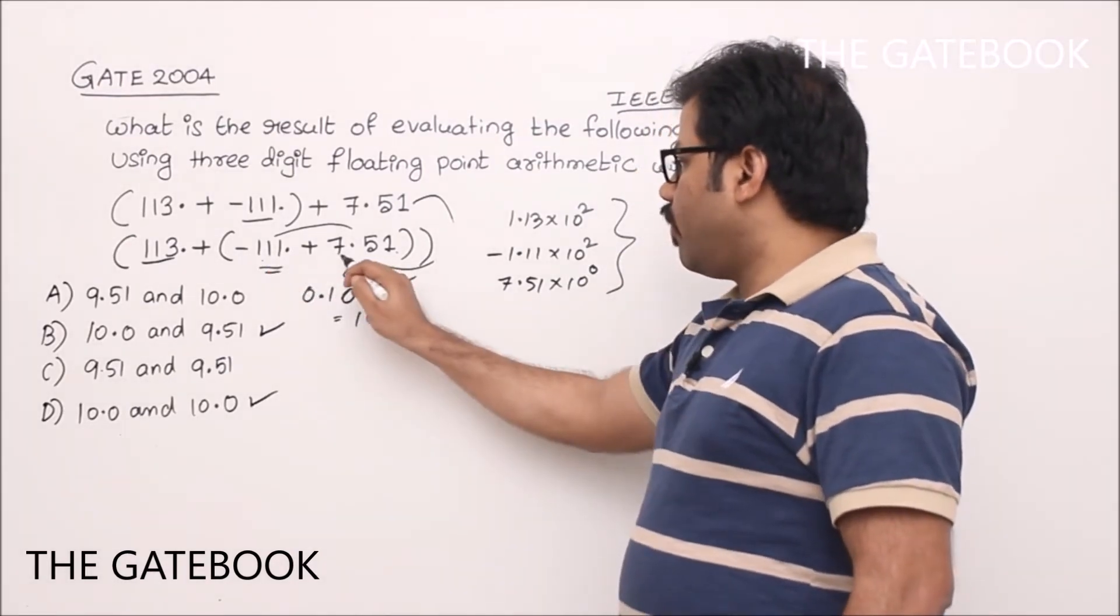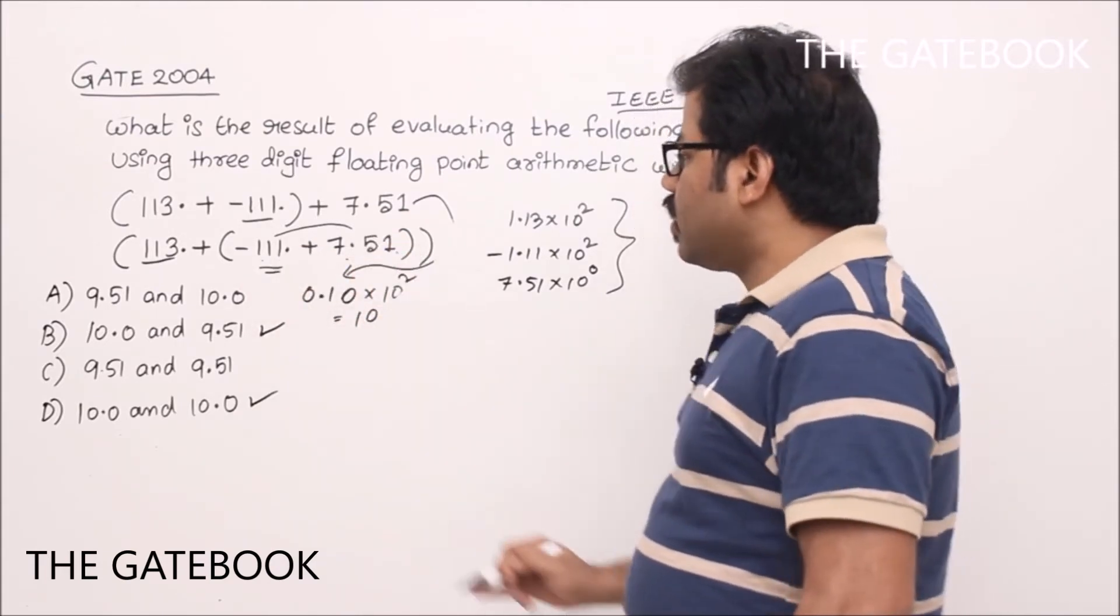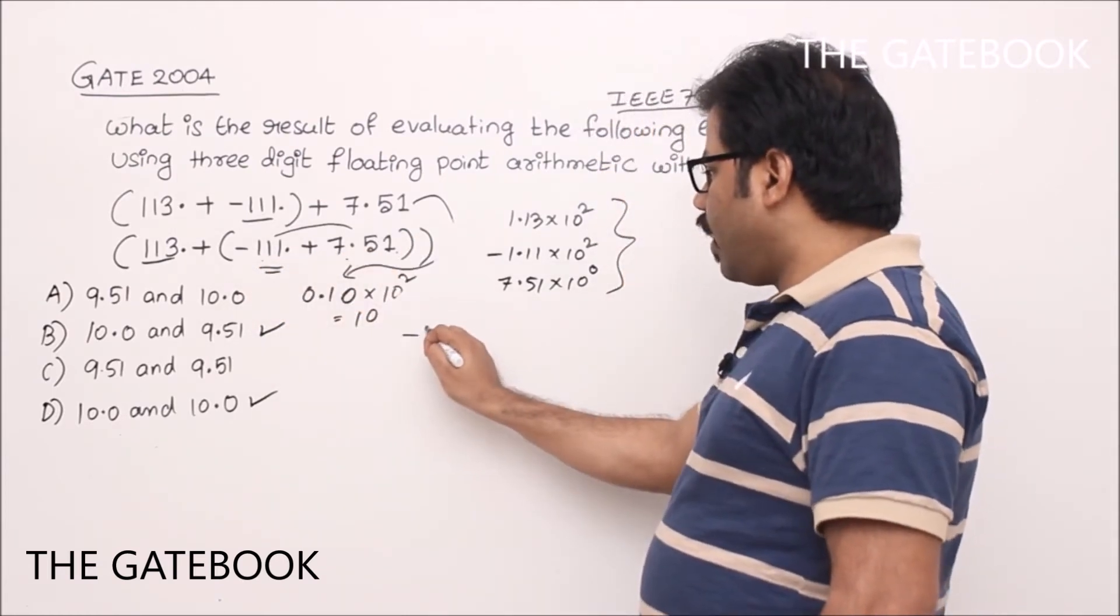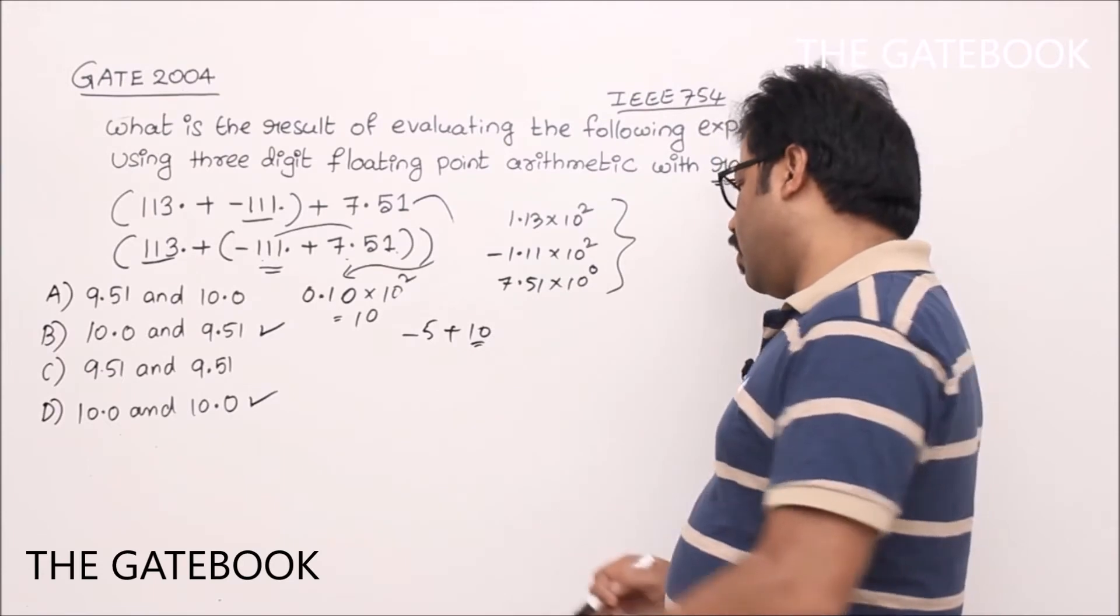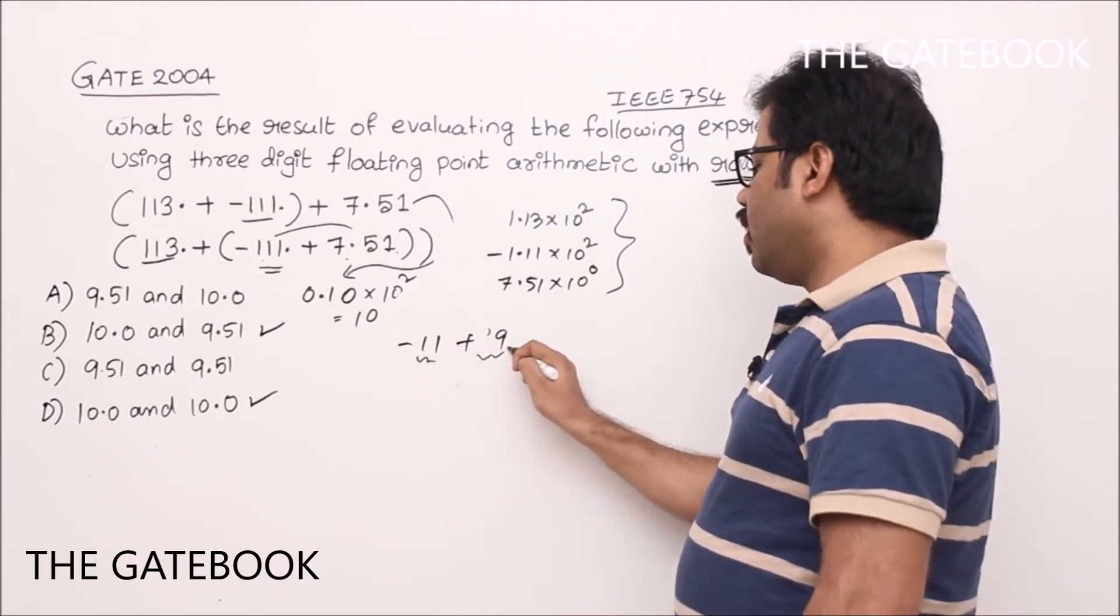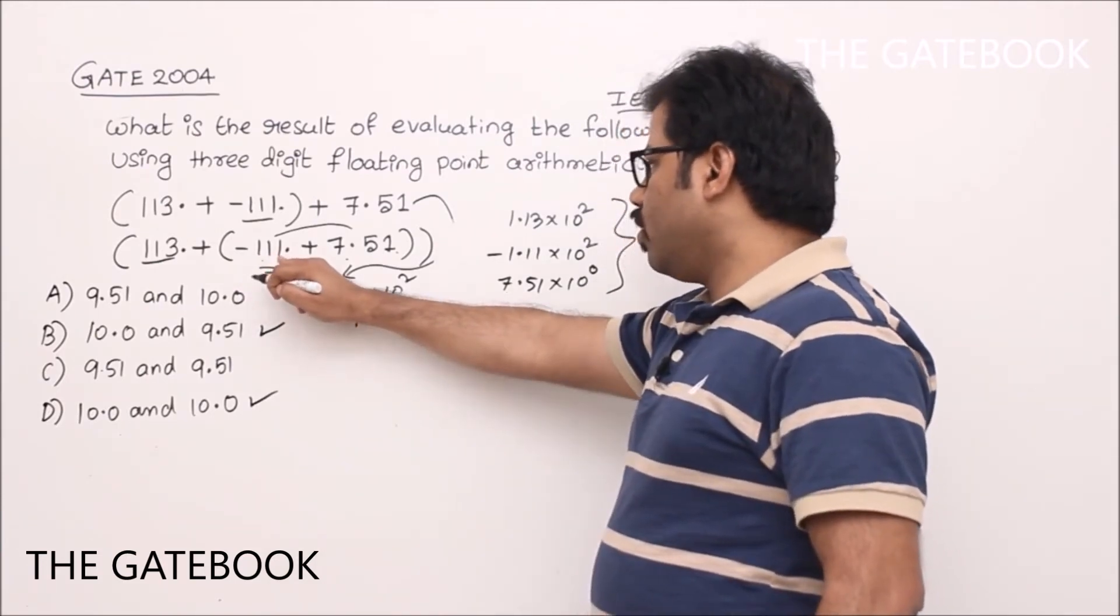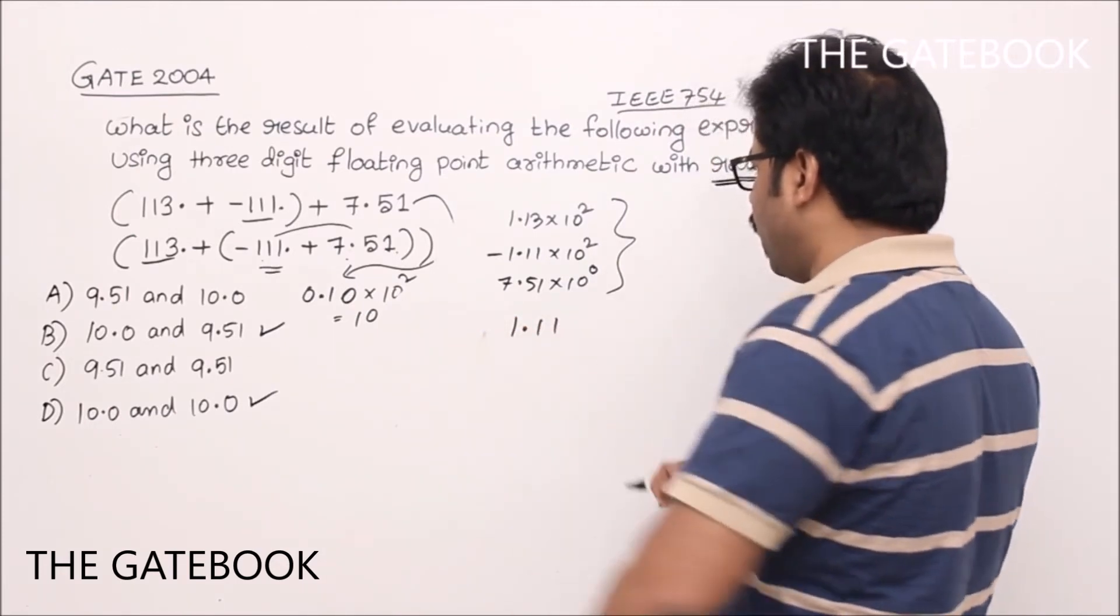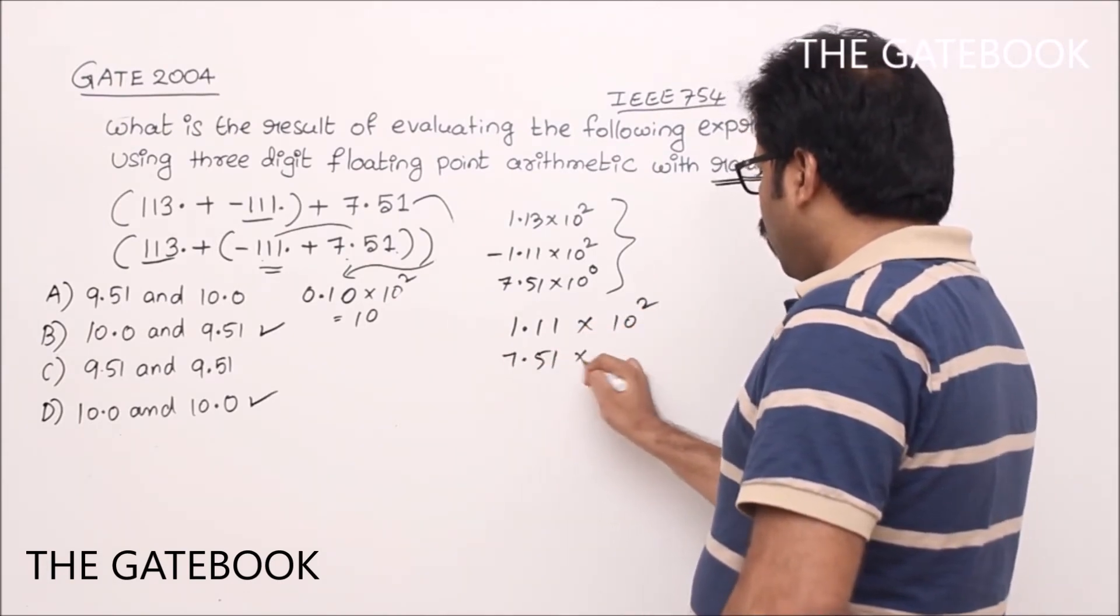First we do this one. 7.51 plus minus 111. End of the day what happens? Subtraction. We have to subtract 111 from 7.51. Example when you have minus 5 plus 10, what you do? Then we subtract smaller number from bigger number. In the same way here also same thing. Example if you have minus 11 plus 9, what you do? Subtract first 11 and 9, then put this negative symbol to answer. Same thing we are going to do now. Subtract 111 from 7.51 first.